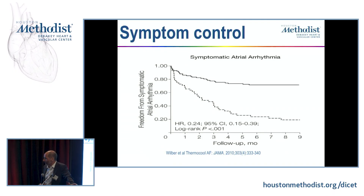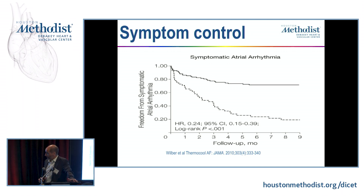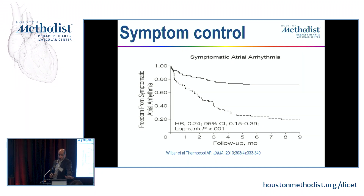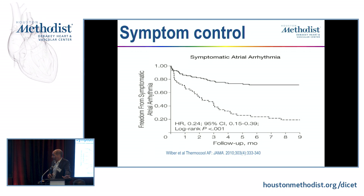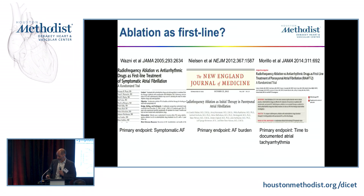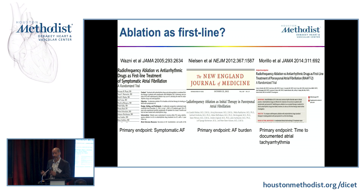AFib ablation does a great job for symptom control. Compared with antiarrhythmics in a randomized study using a thermocircular AFib ablation catheter, ablation performed much better than any drug we have. Success rates are in the high 70 percent range over nine months, declining somewhat over one to two years. It has even been tested as first-line therapy before trying any antiarrhythmic drug.